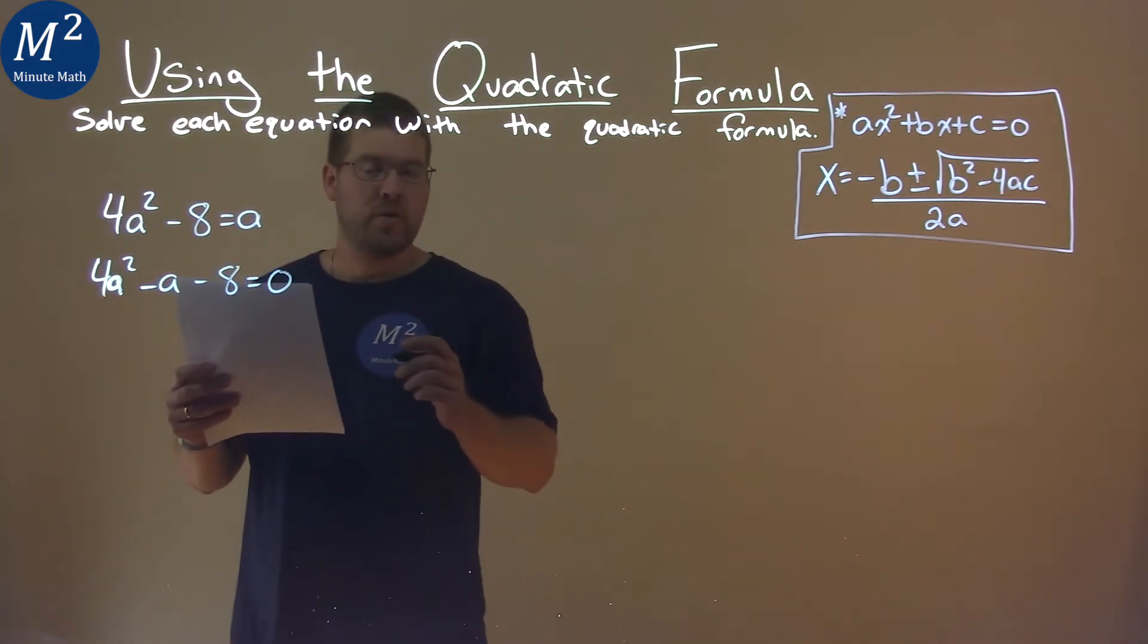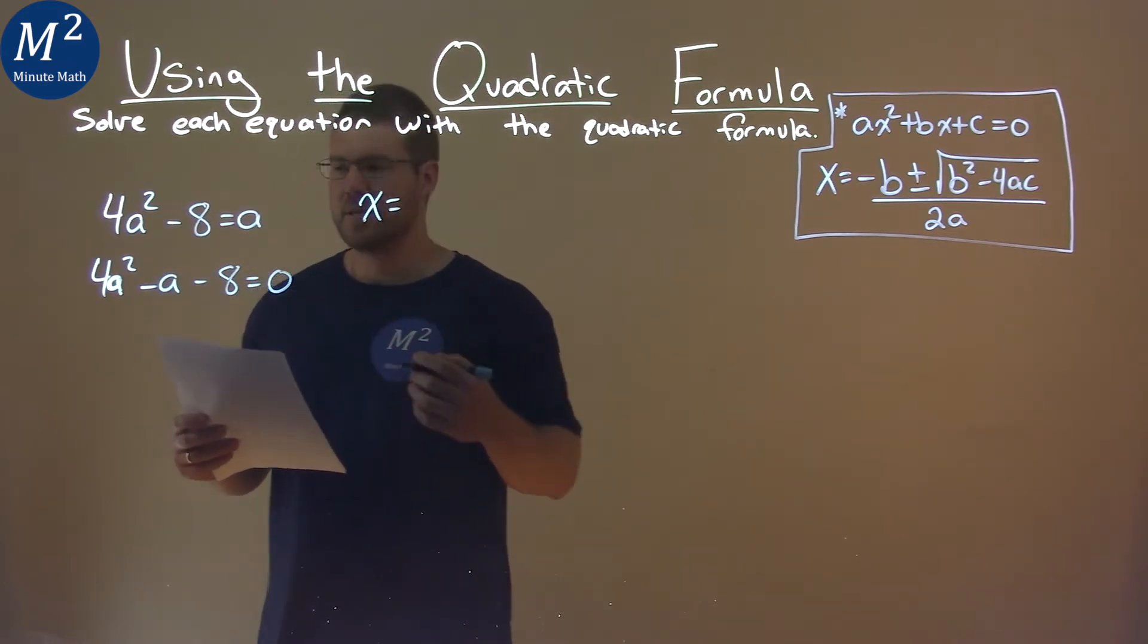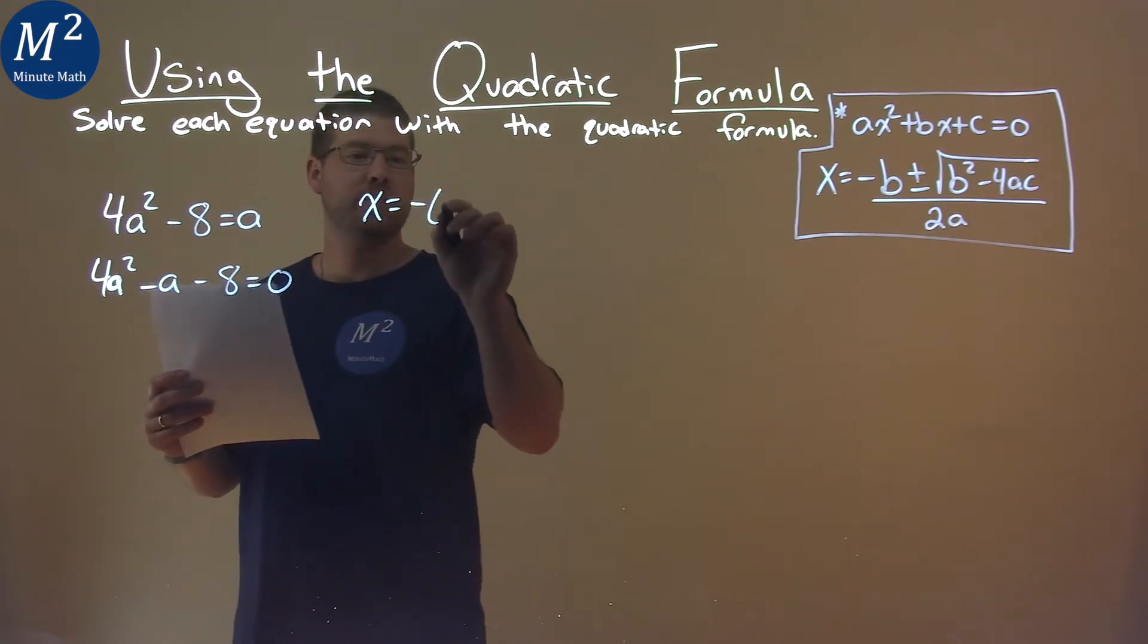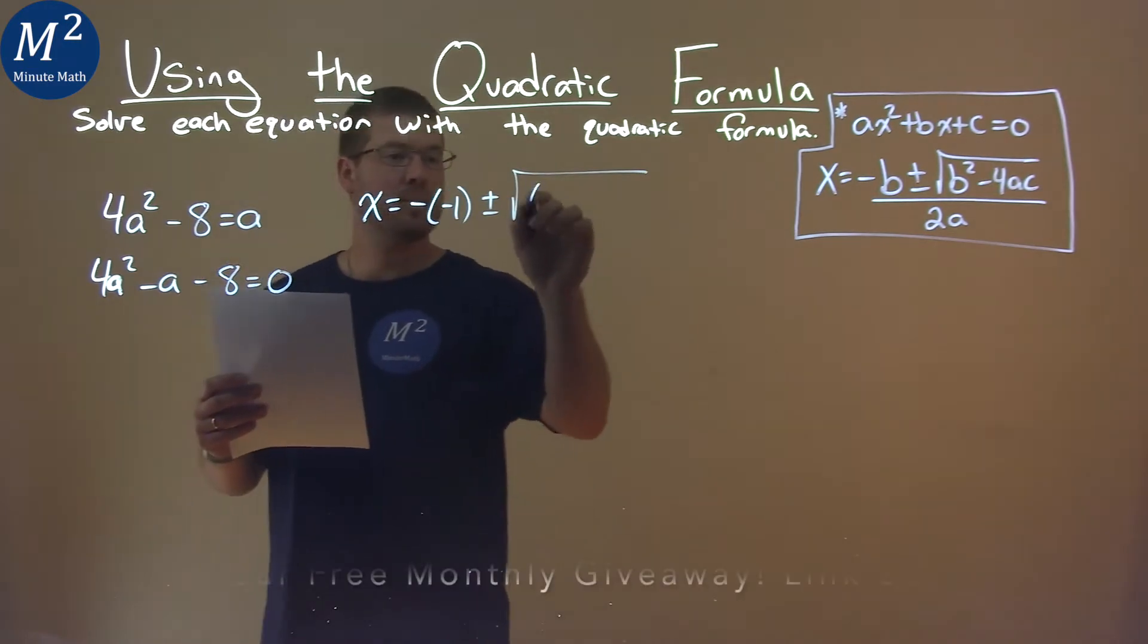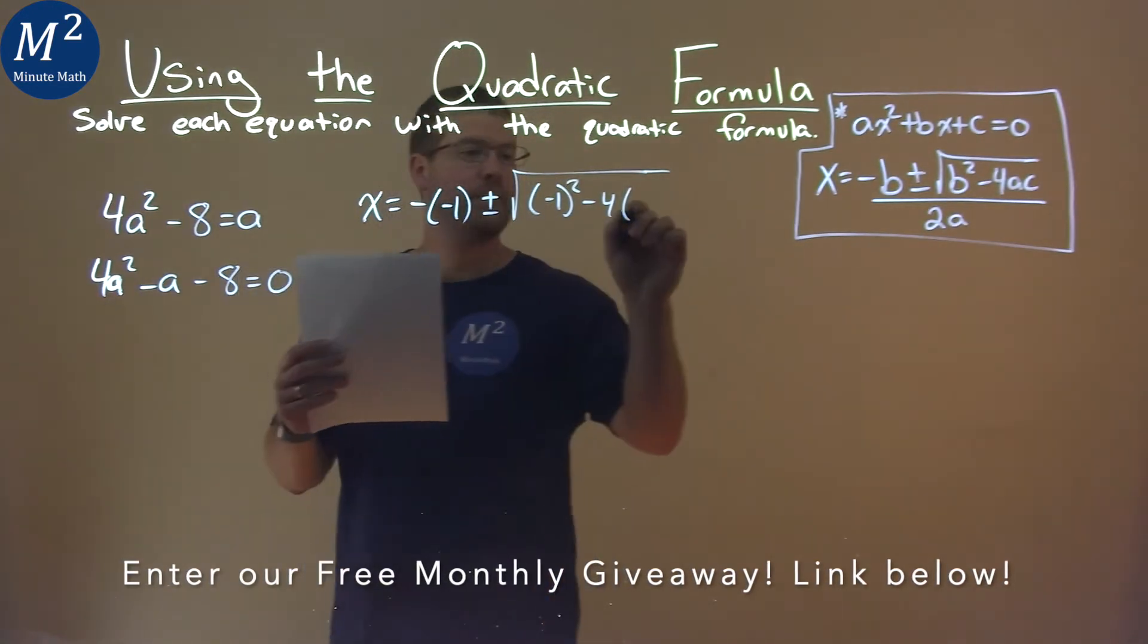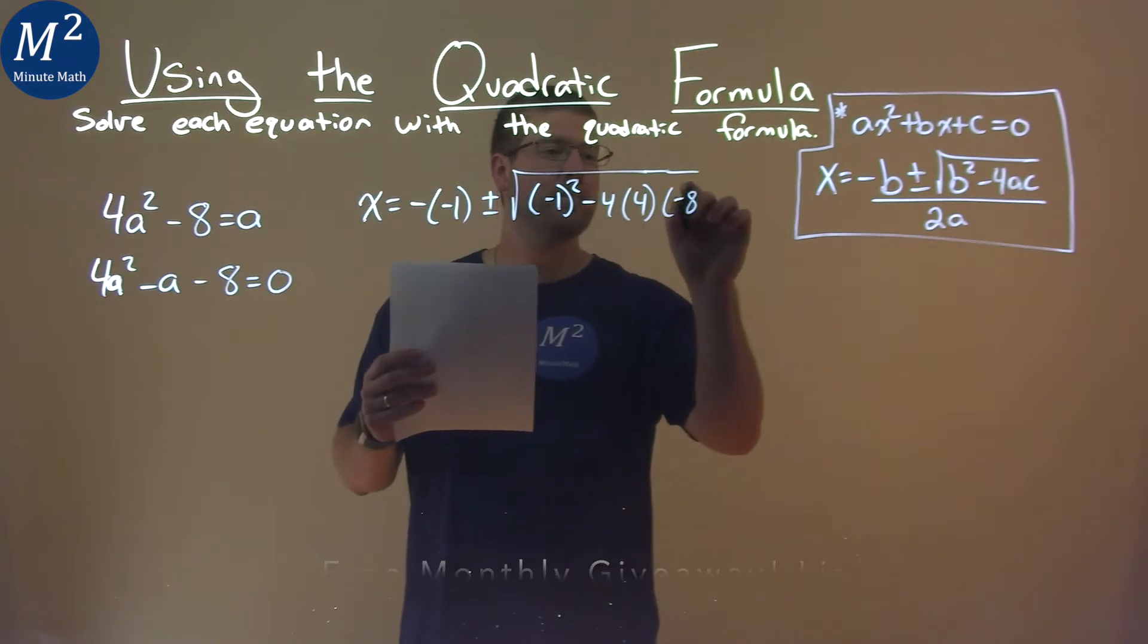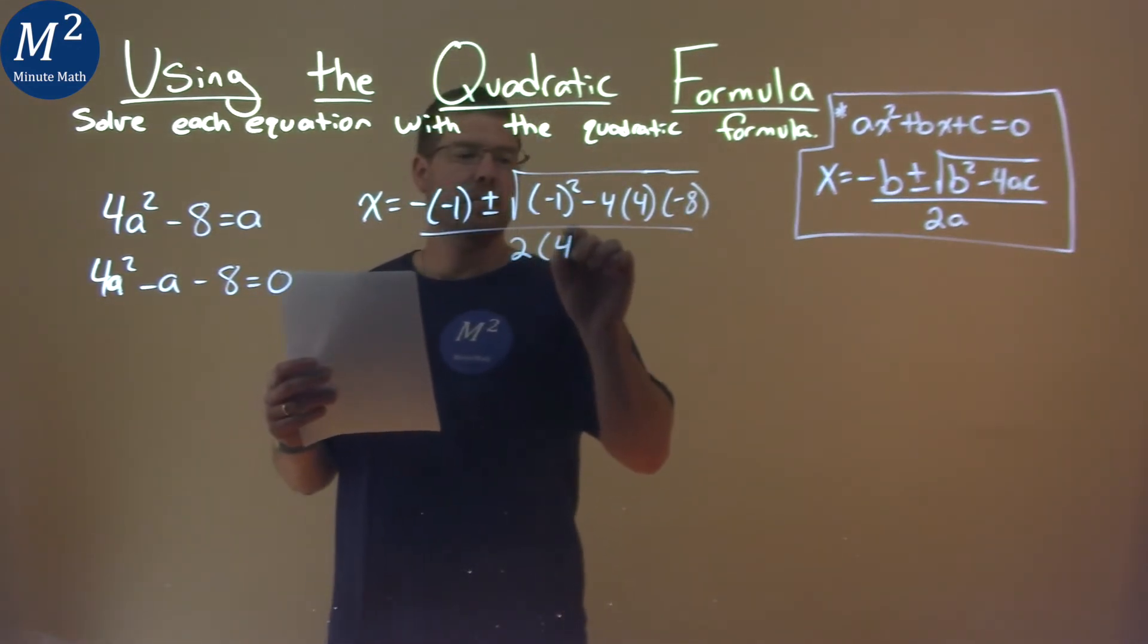Now from here I can use the quadratic formula. x equals, or in this case a, but we say x, negative b value, negative 1, don't forget the double negative, plus or minus the square root of b², negative 1 squared, minus 4 times our a value, which is 4, times our c value, which is negative 8, all over 2 times a, which is 4.